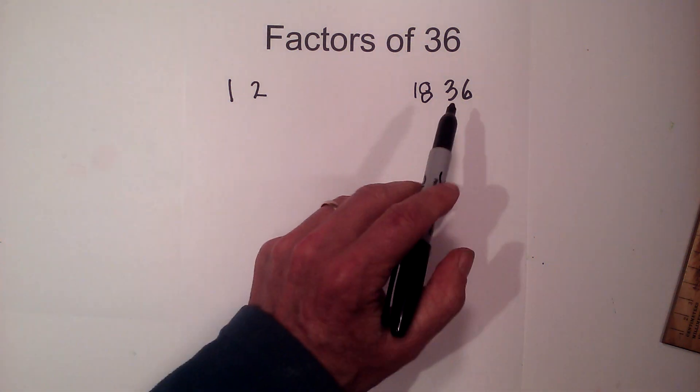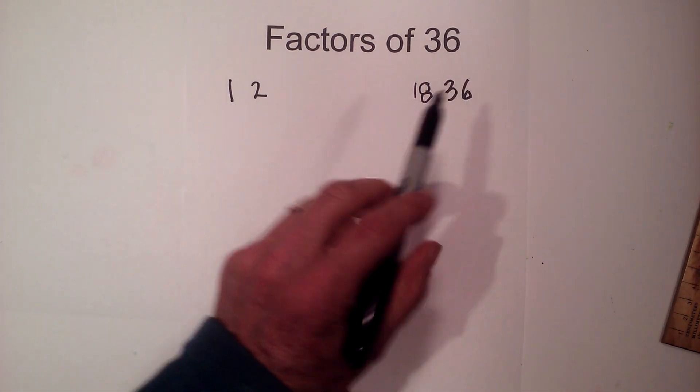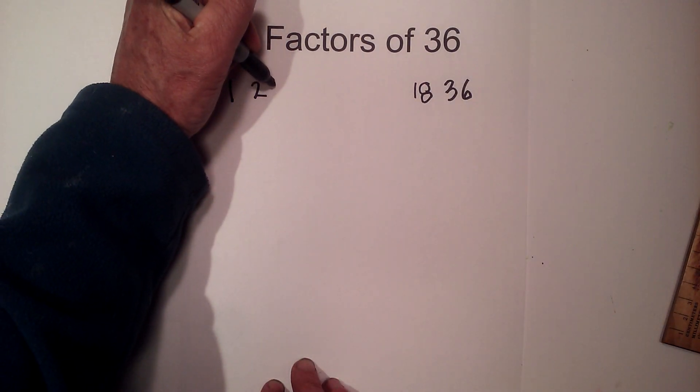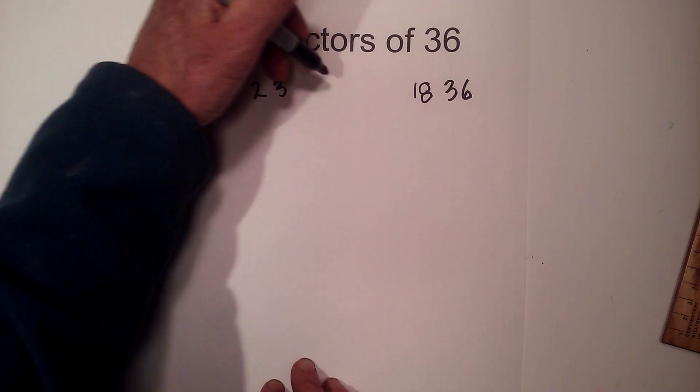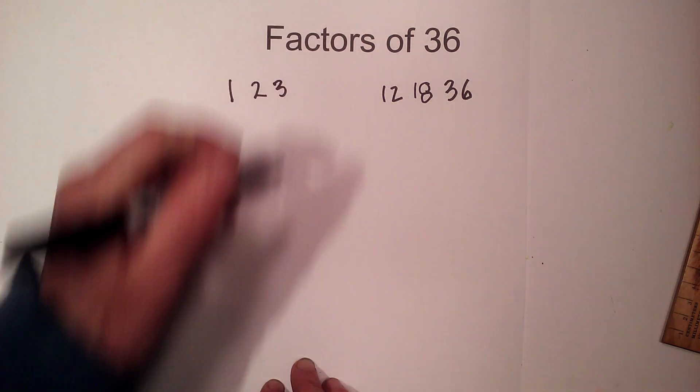Will 3 go into 36? Yes, if I add 6 plus 3 is 9 and 9 is divisible by 3 so 3 times 12 equals 36.